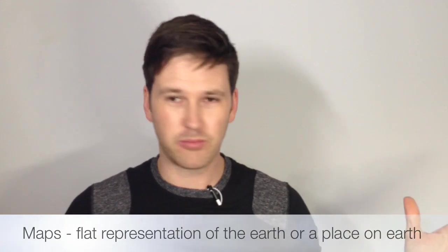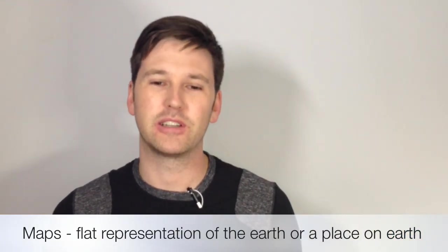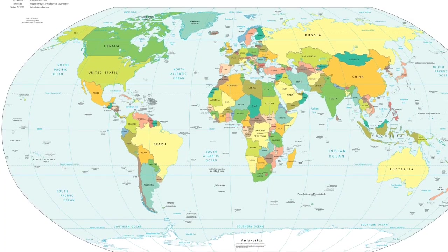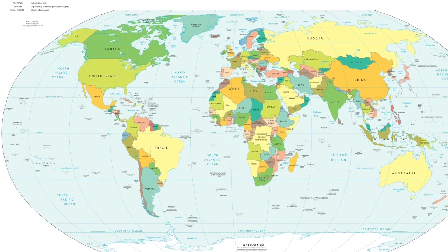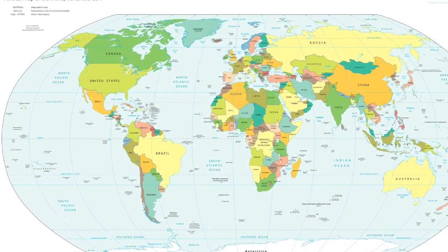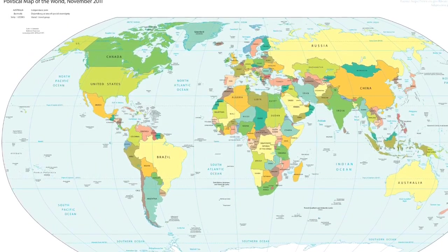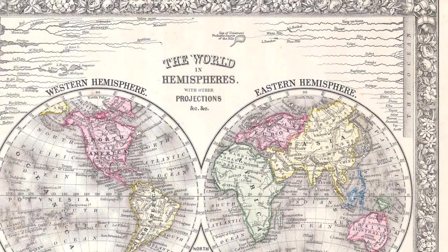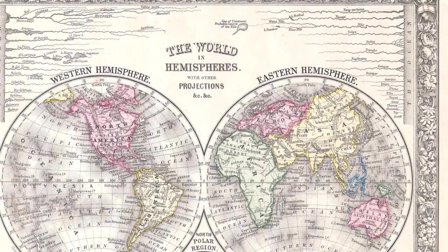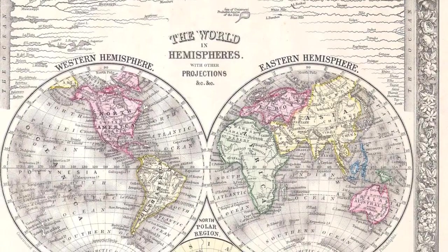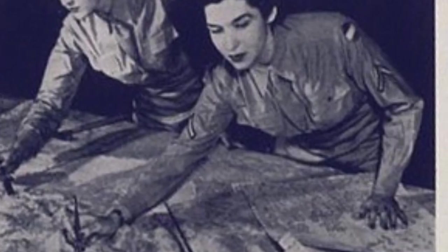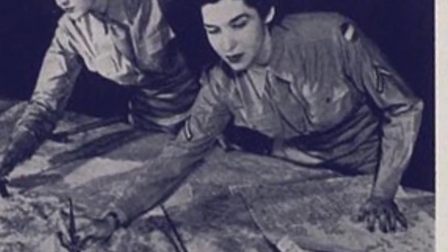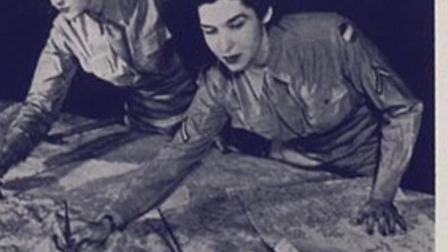So a map — you've seen them before — it's a flat representation of the earth. Maps can show lots of different types of information, especially locations of places on earth. There are lots of different types of maps, but we'll get into that in another lesson. Maps use projection — that's when you try to display a round object, like the world, on a flat surface, like a map, and that can cause some inaccuracies. Cartographers, who are people who make maps, have long struggled to figure out what the best type of projection is.